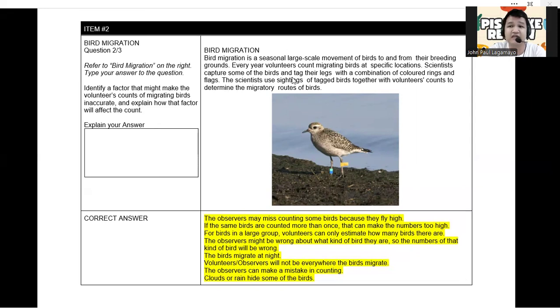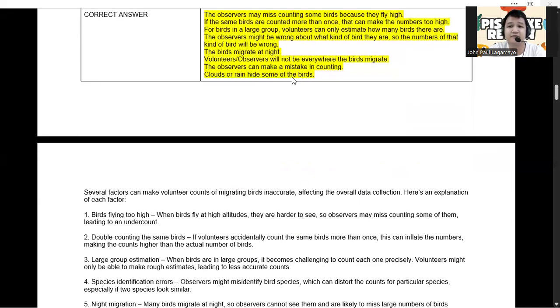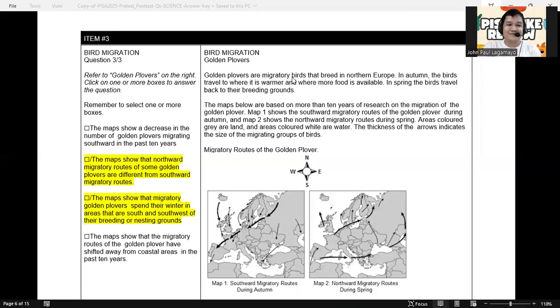Next, we have item number three. Let us now proceed to item number three. And this is still related to bird migration. You have to refer to the golden plovers on the right side. And let us try to read. Bird migration, golden plovers. Golden plovers are migratory birds that breed in northern Europe. In autumn, the birds travel to where it is warmer and where more food is available. In spring, the birds travel back to their breeding grounds.